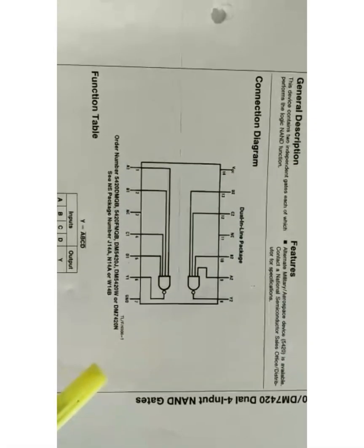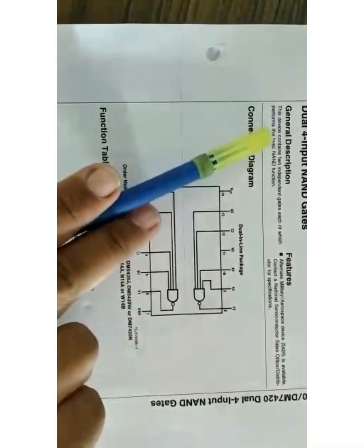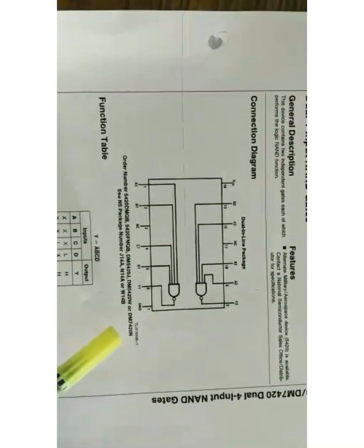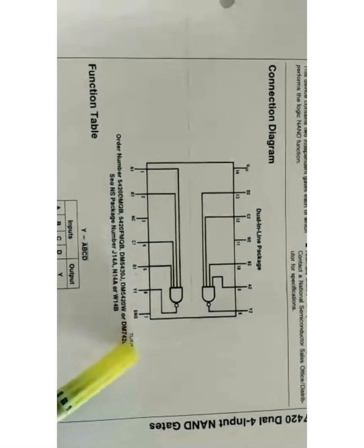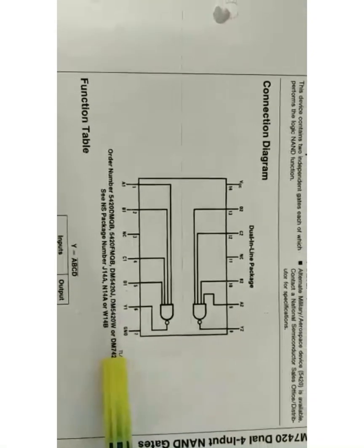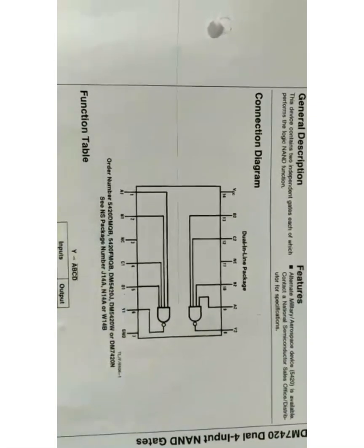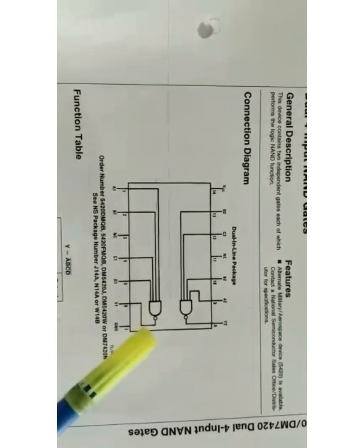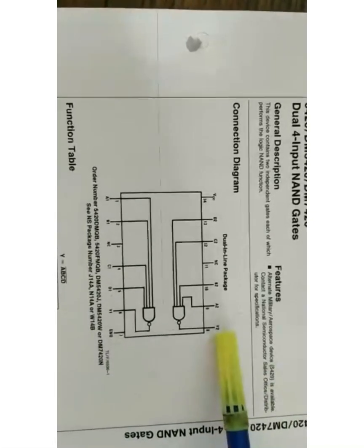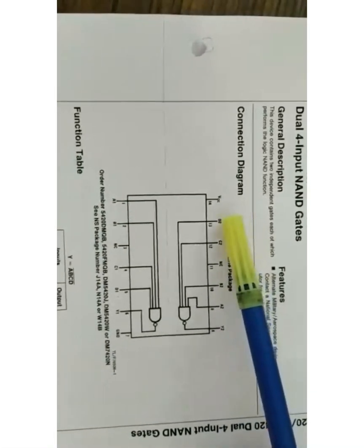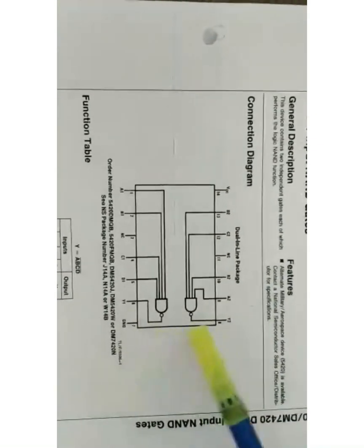Now see the IC 7420 pin configuration, which we are going to use in our experiment. The 7420 is a 4-input NAND gate. The 7400 IC has only 2 inputs, but our experiment requires a 4-input NAND gate, so we use 7420 to reduce circuit complexity. It is a 14-pin IC with 2 NAND gates. For the first gate, pins 1, 2, 4, 5 are inputs and pin 6 is output; pin 7 is ground, pin 3 is no connection. For the second gate, pin 8 is output, pins 9, 10, 12, 13 are inputs, pin 11 is no connection, and pin 14 is VCC. Both NAND gates will be used in our experiment.